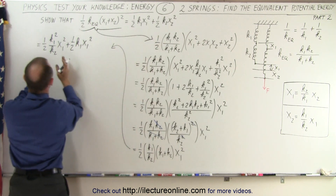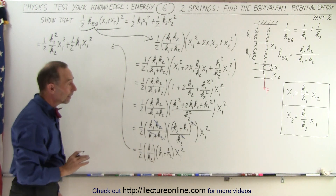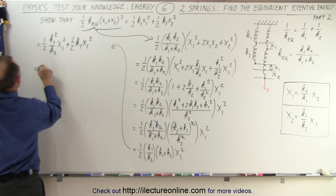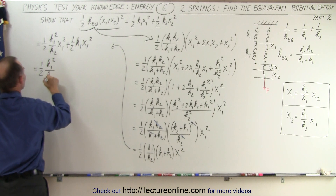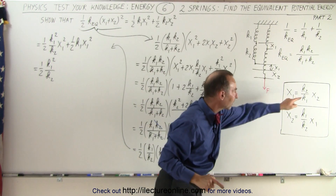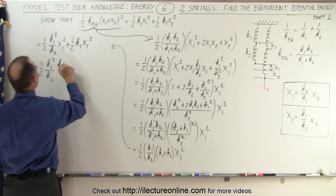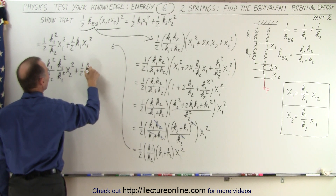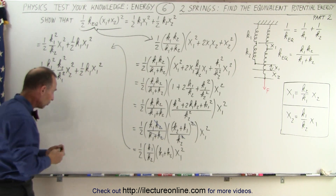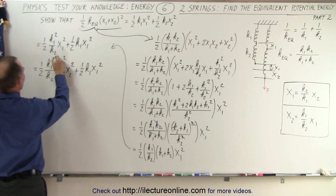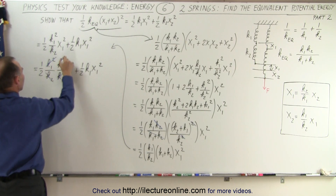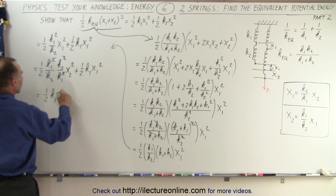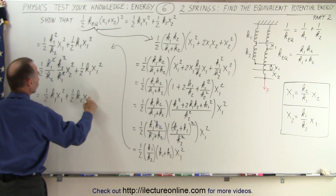The second term is already equal to one-half k1 x1 squared, which matches the target. For the first term, we replace x1 squared using x1 = (k2/k1) x2, so x1 squared becomes k2 squared over k1 squared times x2 squared. Then k1 squared cancels with k1 squared, and k2 squared cancels with one k2, leaving one-half k2 x2 squared. Rearranging, we get one-half k1 x1 squared plus one-half k2 x2 squared.